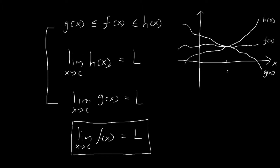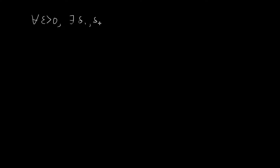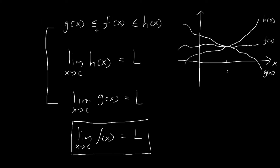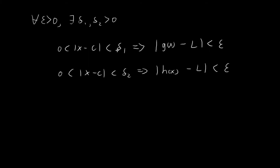In order to prove this statement, we need to establish the epsilon-delta definition. We can start by noting that these two limits exist. So what that means is that for whatever value of epsilon I come up with, there must exist values δ₁ and δ₂, both larger than 0, such that when |x − c| < δ₁, it immediately implies |g(x) − L| < ε, and when |x − c| < δ₂, it immediately implies |h(x) − L| < ε. For whatever ε you choose, δ₁ and δ₂ must exist because we already know these two limits exist.